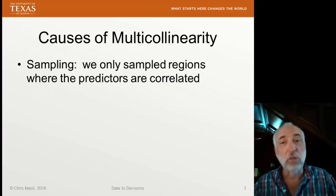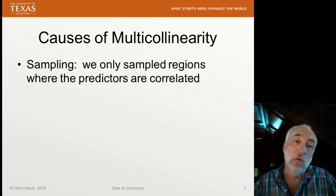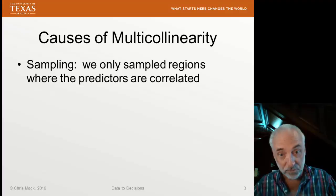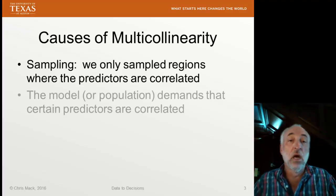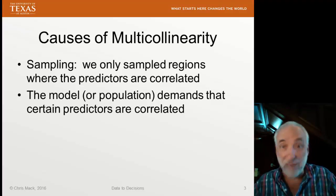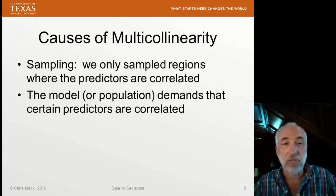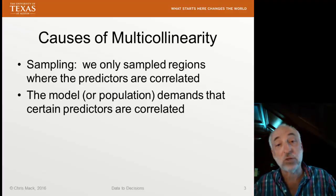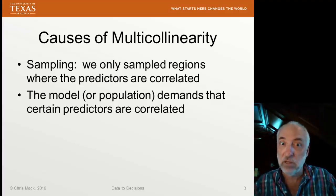One cause is sampling. If we only sample regions of space where everything is correlated, then our model is going to end up being correlated as well — and we might be able to fix this by changing the sampling. But it could be that sampling doesn't have anything to do with it. Maybe what's really happening is that our predictors are correlated in the population, and the model demands that the predictors are correlated because that's just the way it is — you have to deal with it.